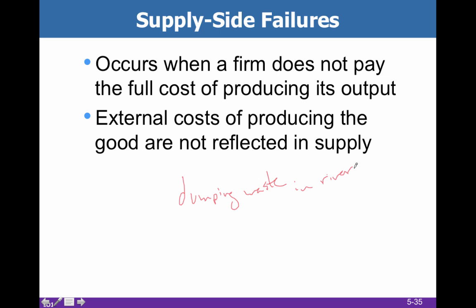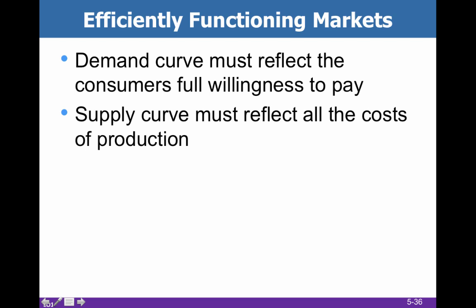Problematically, this means that somebody else is going to have to pay the cost. Maybe the fish are going to die and the fishermen pay the cost, or it's going to make people sick who drink the water — they pay the cost, not the people who are supposed to. What that's going to do is make sure that our demand curve, in the case of a demand side failure, does not reflect full willingness to pay, or our supply curve doesn't reflect all the costs of production.